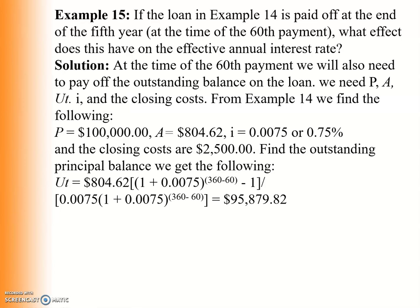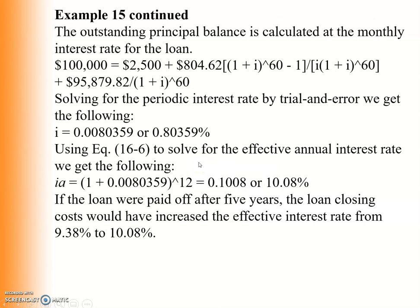The outstanding balance at the end of the 60th payment is $95,879. This outstanding principal balance is calculated using the monthly interest rate of the loan: $100,000 plus $2,500 closing costs, with payments of $804.62, using the expression 804.62 × [(1 + i)^60 - 1] / [i × (1 + i)^60].